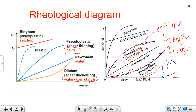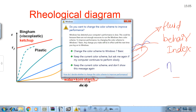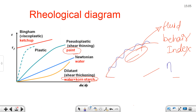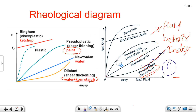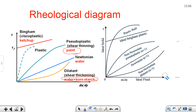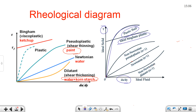The next two important types are Bingham plastic and plastic fluid. These are also non-Newtonian fluids. Plastic fluid is one for which the relationship between tau and du/dy is non-linear, and it passes through the origin — hence the name plastic fluid. Bingham plastic is slightly different in that it requires an initial yield stress before it starts flowing.